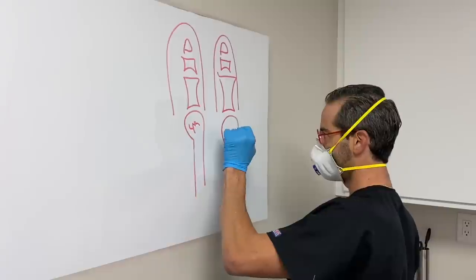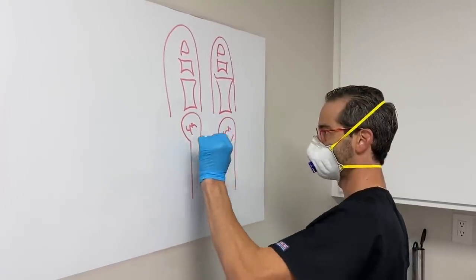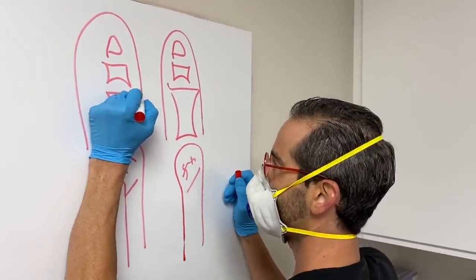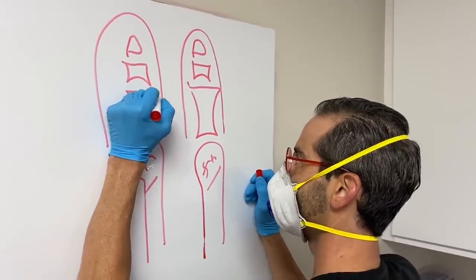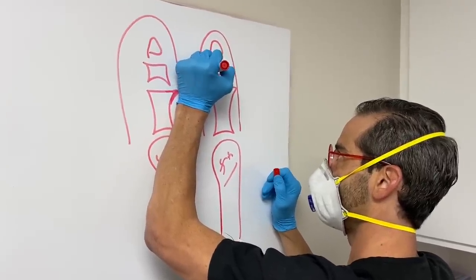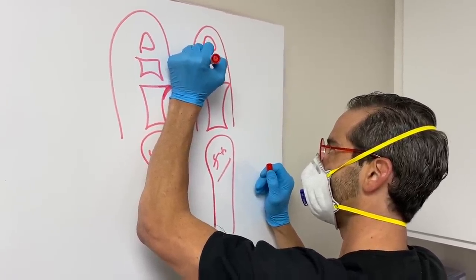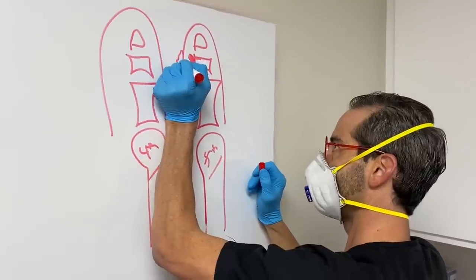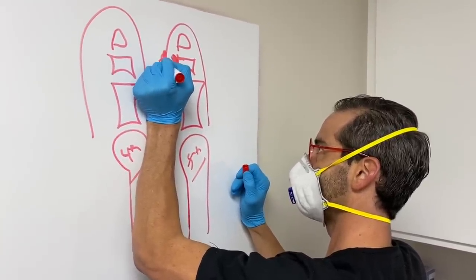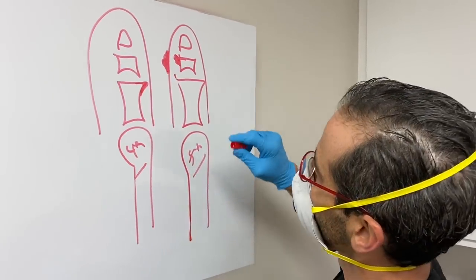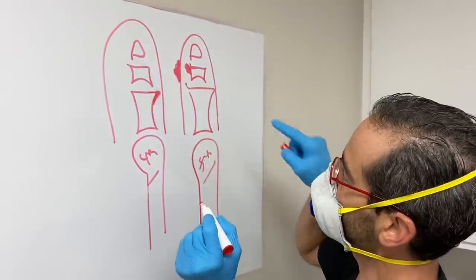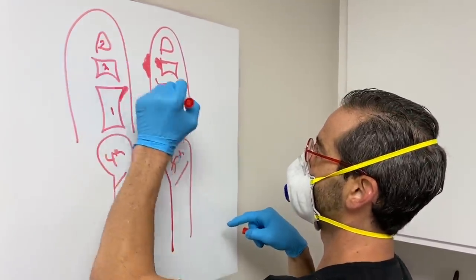This is the fourth toe, and this is the fifth. We're going to exaggerate a little bit here, and here as well. We have one, two, and three bones in the toe.